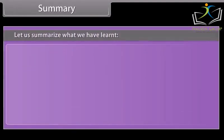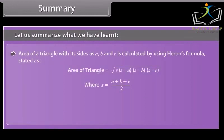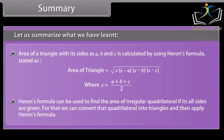Let us summarize what we have learned. The area of a triangle with its sides as A, B and C is calculated by using Heron's formula. Heron's formula can also be used to find the area of an irregular quadrilateral if all its sides are given, by converting the quadrilateral into triangles and then applying Heron's formula.